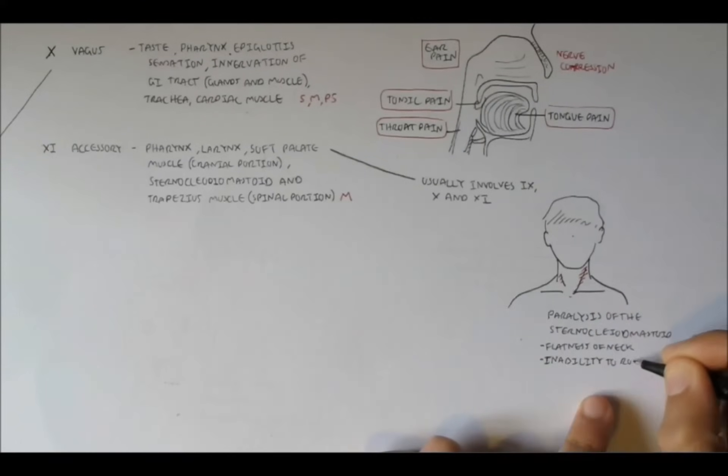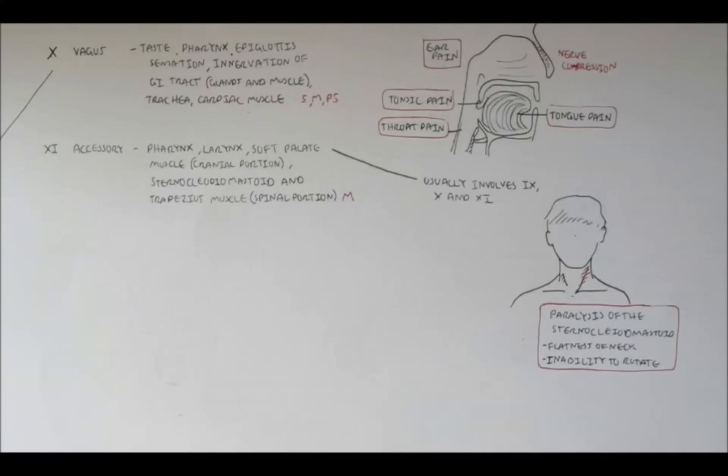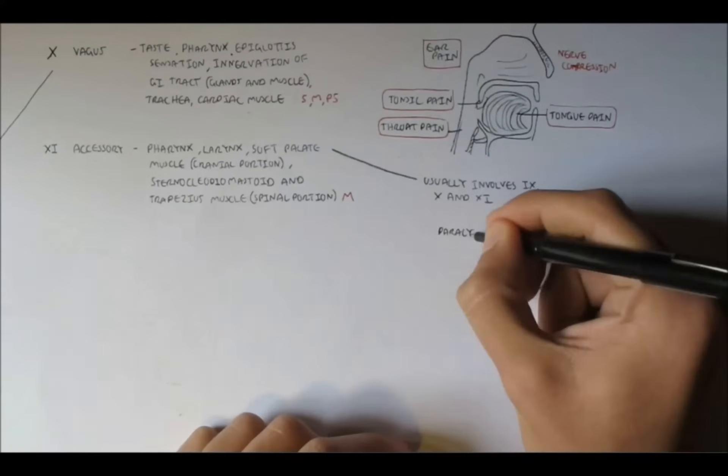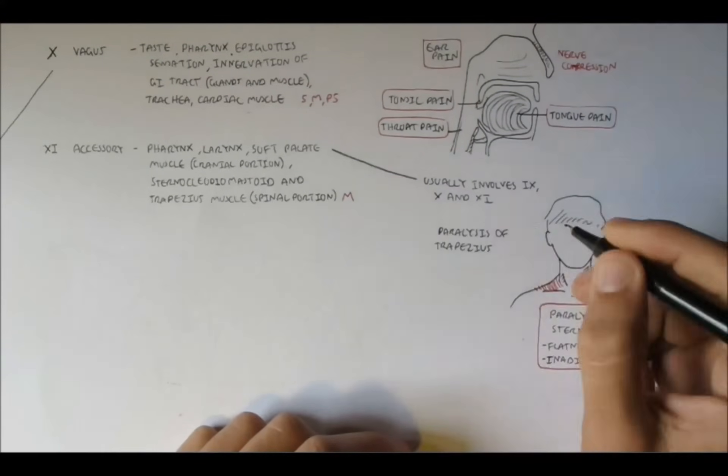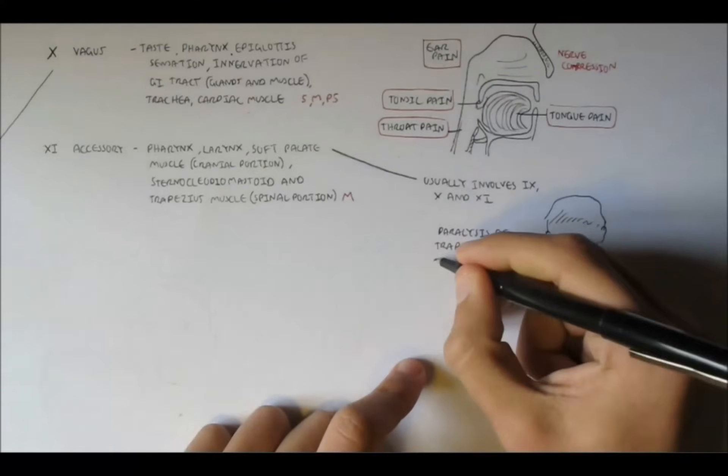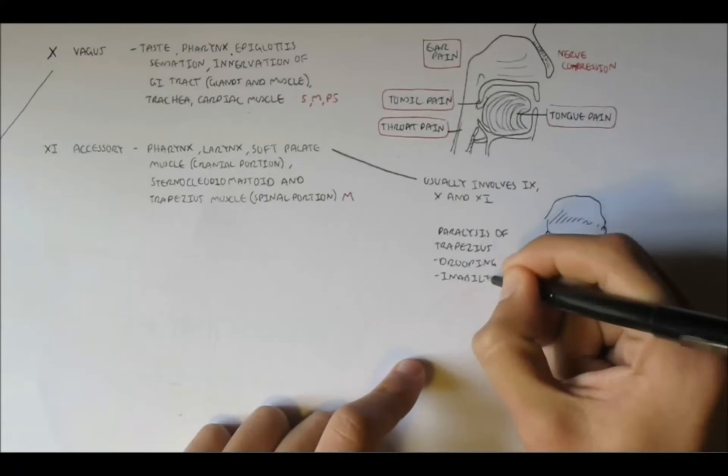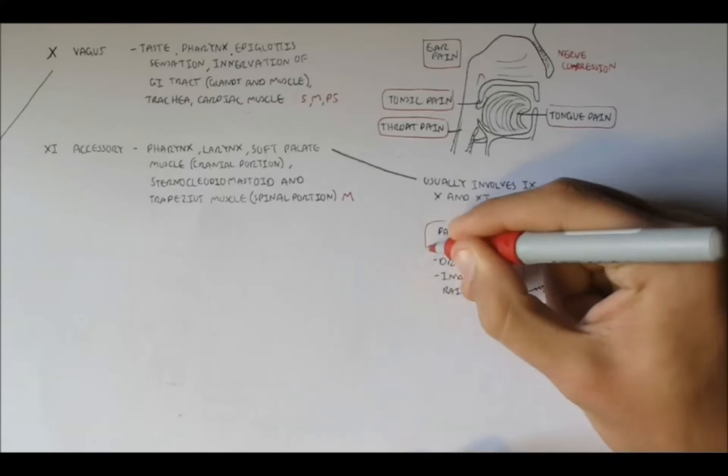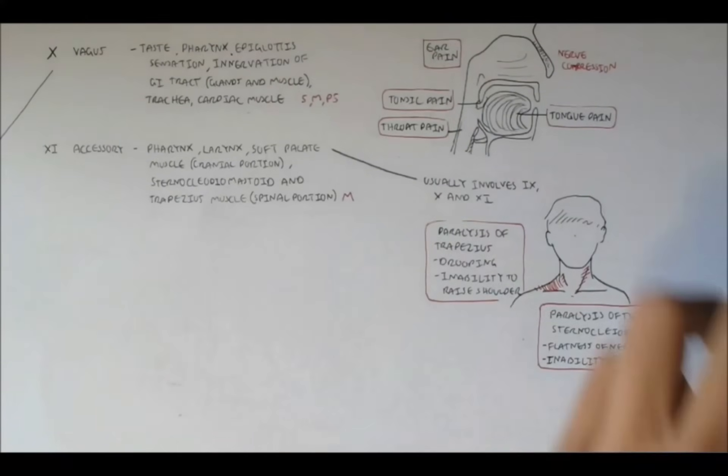And it's portrayed by the flatness to the neck, as well as inability to rotate the neck itself. Damage to the accessory nerve can also paralyze the trapezius muscles, which causes a drooping off of the muscle symptom, as well as an inability to raise the shoulders. Paralysis of these muscles can be caused by a gunshot or stab wound to the neck. So again, the sternocleidomastoid muscle and the trapezius muscle can be paralyzed if this nerve is damaged from gunshot or stab wounds to the neck.